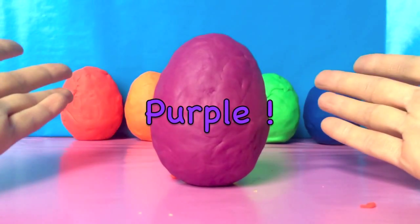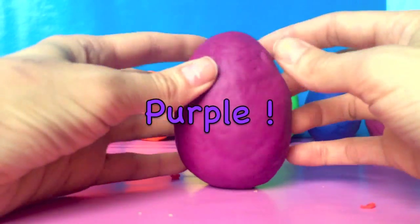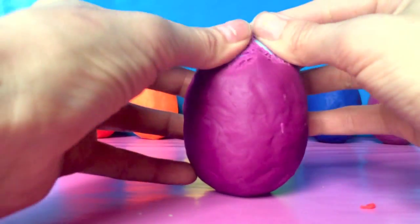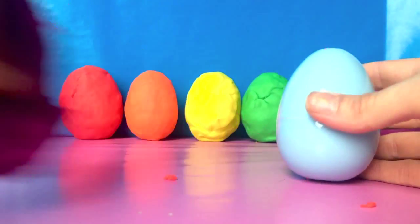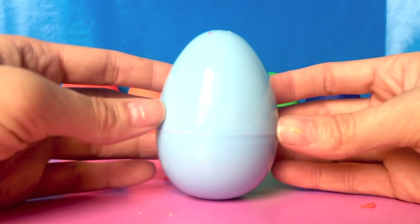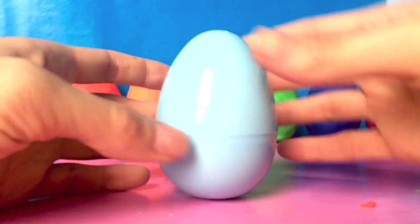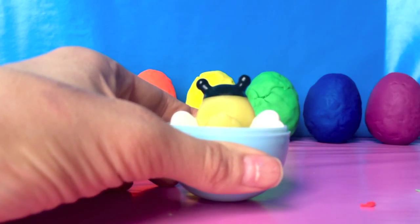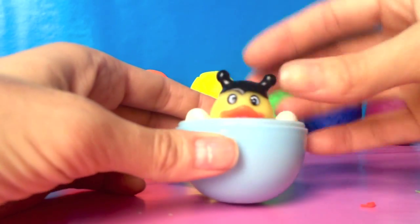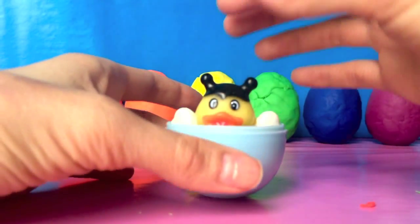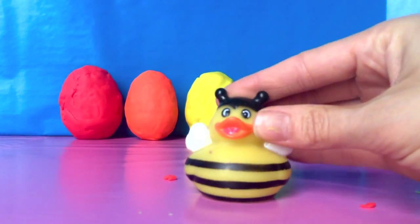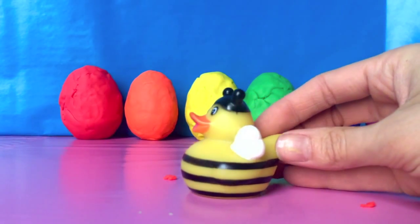Here's a purple egg! What's inside? What color is this? Yes, it's blue! It's another ducky! He's dressed like a bee!